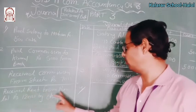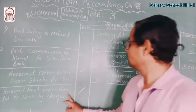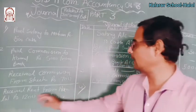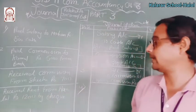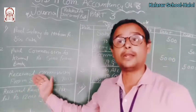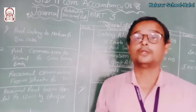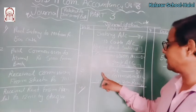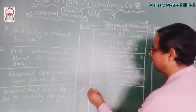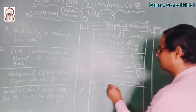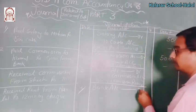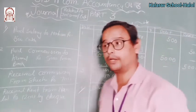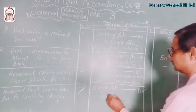Received rent from Ram — rupees 100 by check. You received it through check, so what money you receive is through bank — bank account debit. Rent becomes your income, nominal account — all profit and gain to be credited — so credit to rent received account.